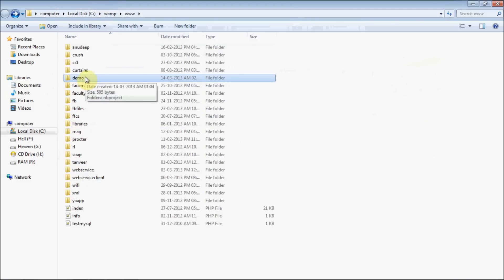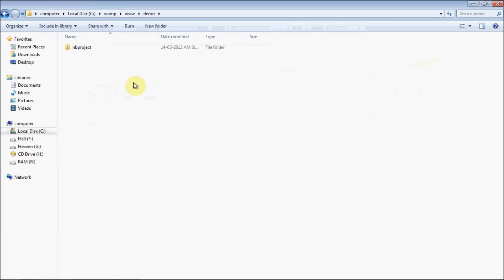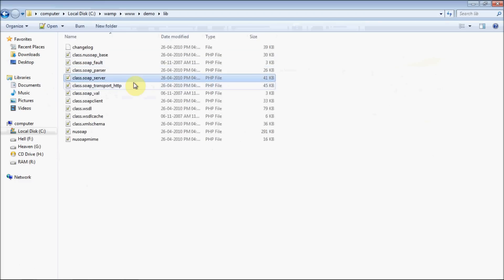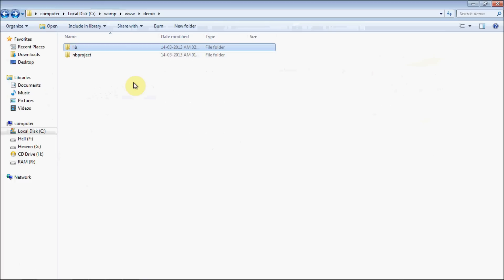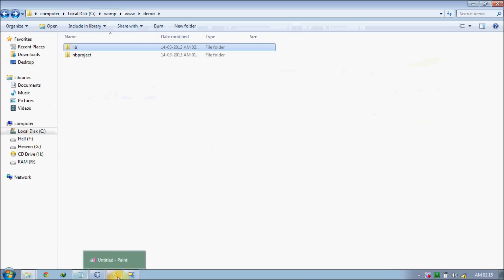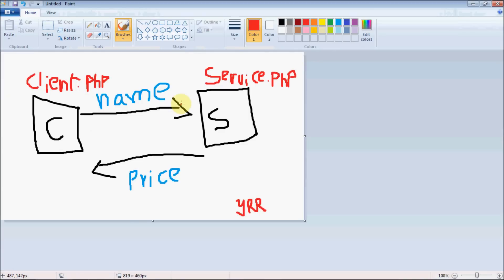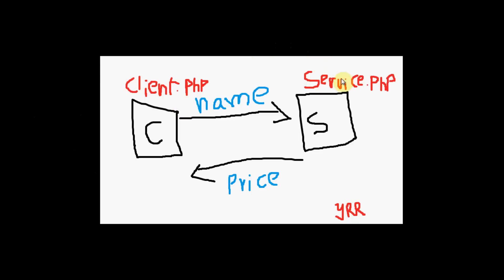After extracting you will see two folders: lib and samples. Don't worry about samples — those are just examples. You need to copy the lib folder and paste it in your project root directory, which is the www root directory of WAMP. Go to your respective project — I have created a demo project — and copy the lib folder there. Now let me explain the project: we are going to create service.php and client.php. The web service will accept a book name and return the price of that particular book.